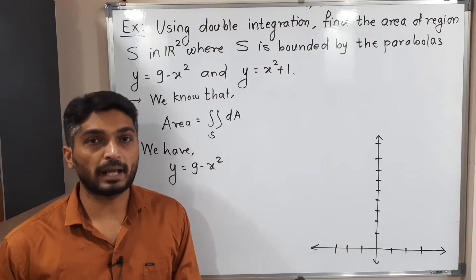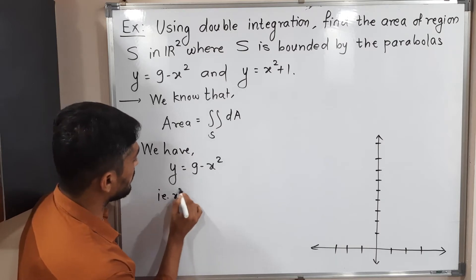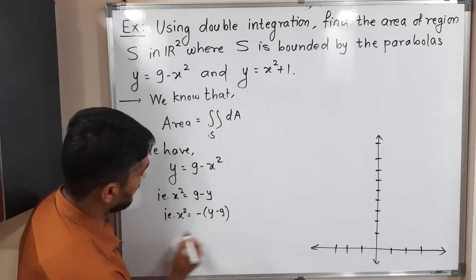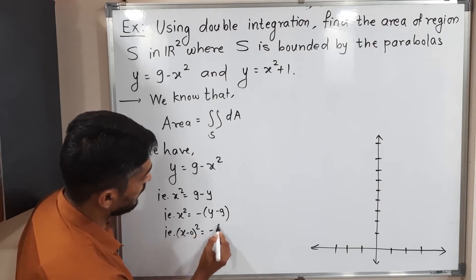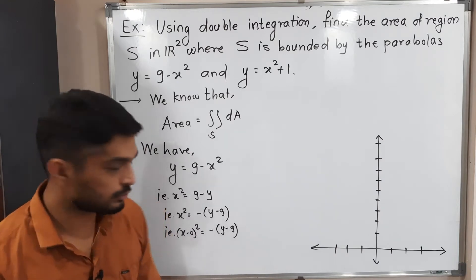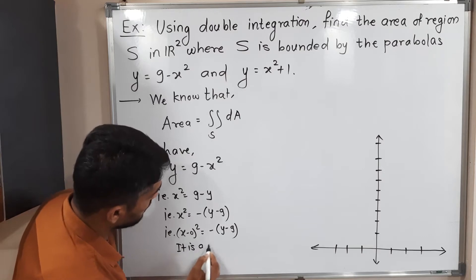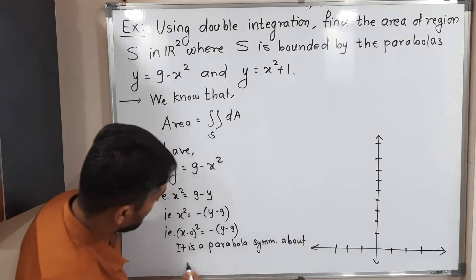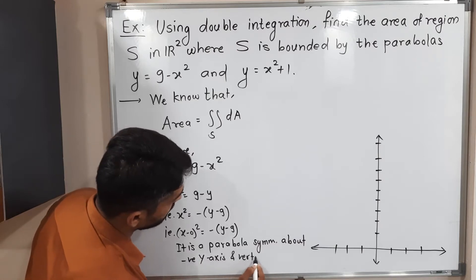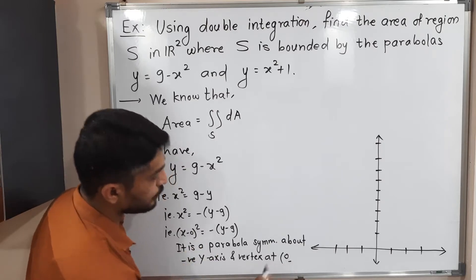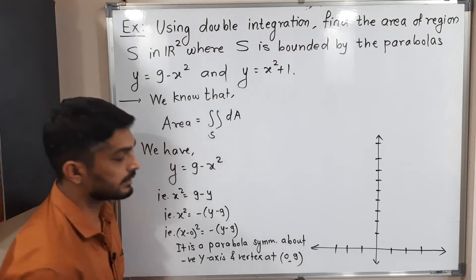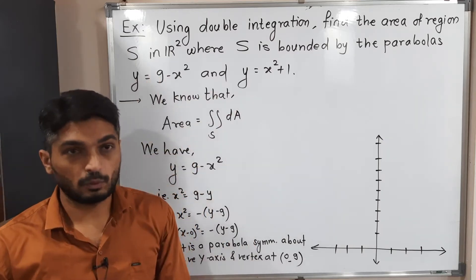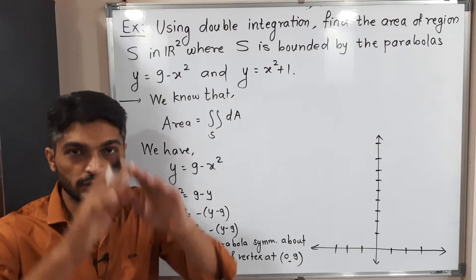Let me write this equation of the parabola in its standard form. Shifting x squared: x squared = 9 minus y, which becomes x squared = minus(y minus 9), or (x minus 0) squared = minus(y minus 9). So this parabola is symmetric about the negative y-axis — meaning it opens in a downward direction — with vertex at (0, 9).